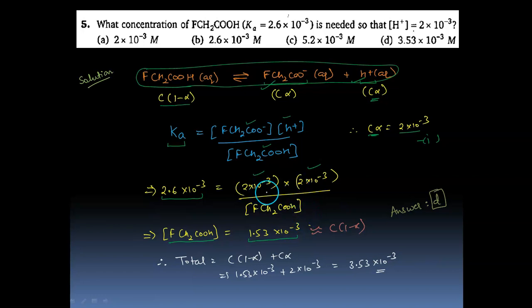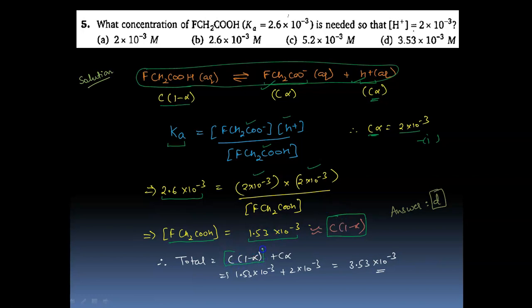But the question asks for the total concentration of fluoroacetic acid needed such that [H⁺] = 2×10⁻³. What we found, 1.53×10⁻³, is only the undissociated portion — part of the acid would also be dissociated. So we add both: C×(1−alpha) = 1.53×10⁻³ plus C×alpha = 2×10⁻³, giving a total acid concentration of 3.53×10⁻³ M. Hence the answer is D.